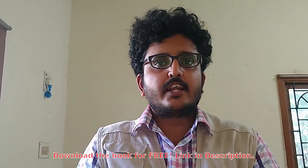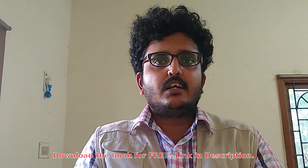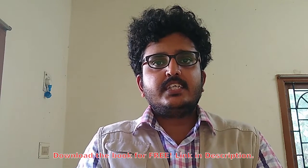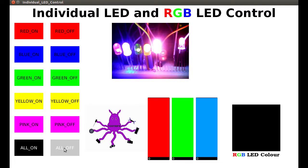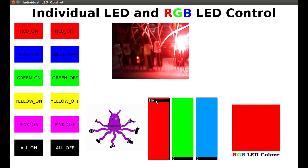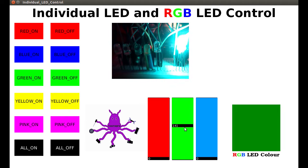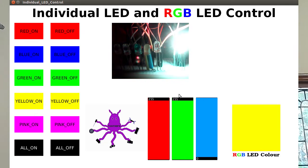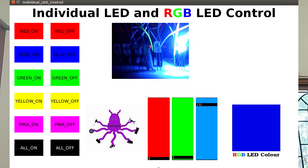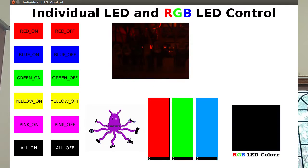The heart of this book starts in chapter 4, where we try to control LEDs — that is, light emitting diodes — using a graphical user interface. You can see a sample of it here. It not only includes regular LEDs but also includes RGB LEDs.